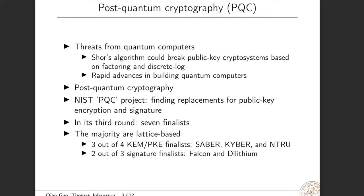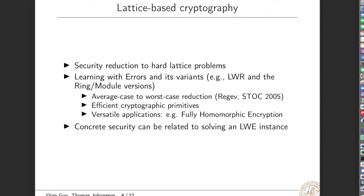Also, two out of three signature finalists are lattice-based. Here, Kyber and Dilithium are from a package called Crystals. So why are lattice-based cryptosystems so attractive? One main reason is that we can have security reduction to hard lattice problems, meaning that we can achieve provable security. One main branch in lattice-based cryptography is cryptosystems based on learning with errors and its variants, for instance LWR and their ring and modular versions.